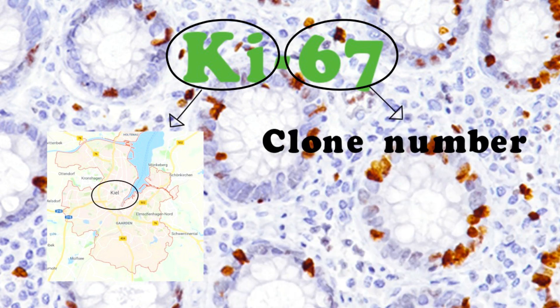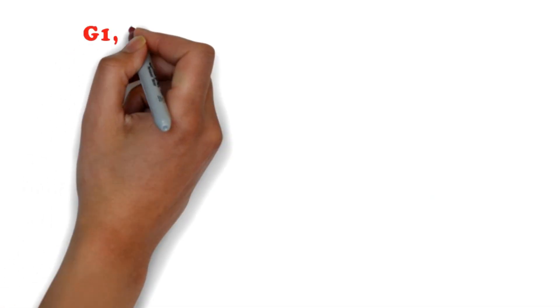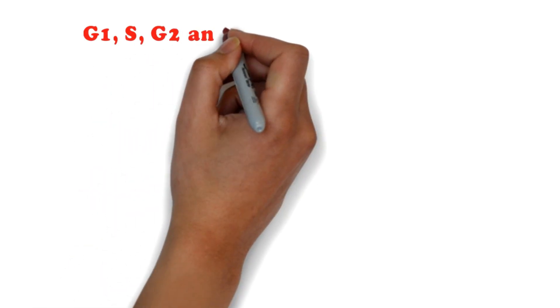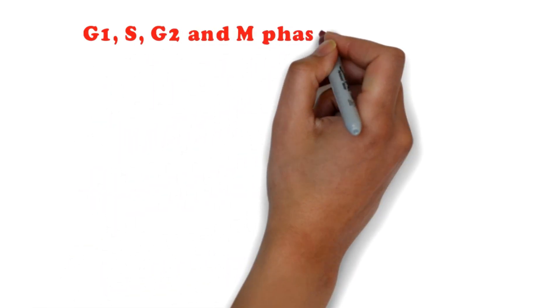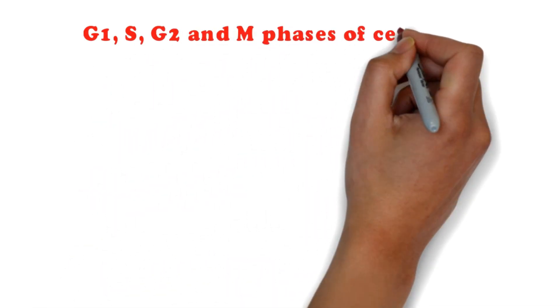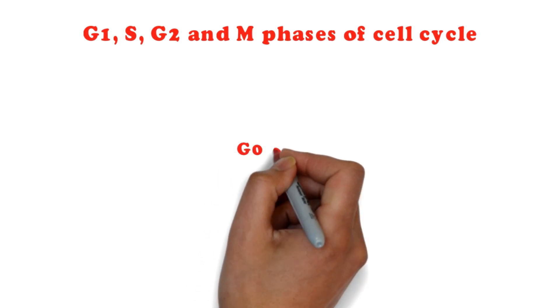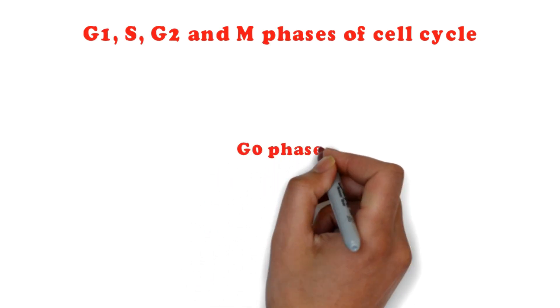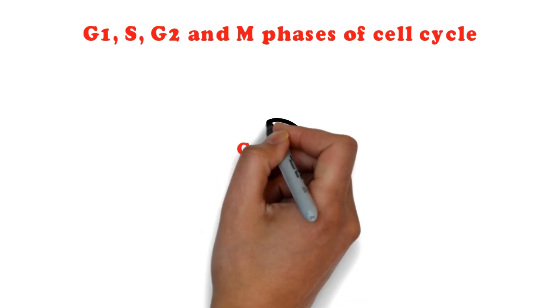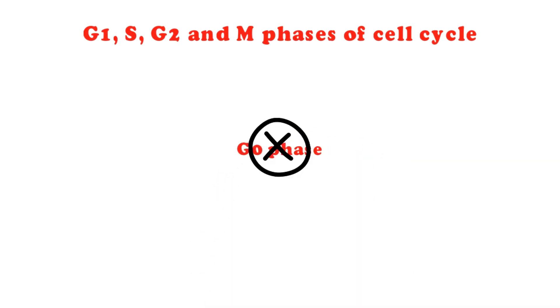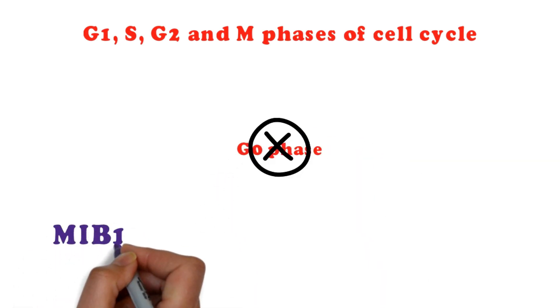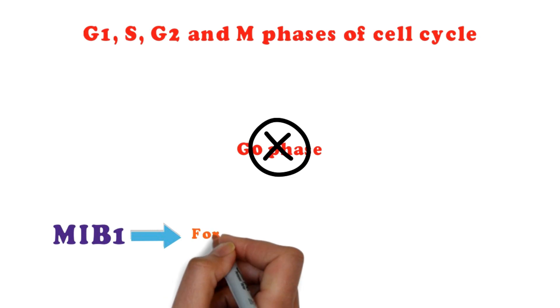Ki-67 is a labile non-histone nuclear protein that is expressed in G1, S, G2, and M phases of the cell cycle, but ki-67 is not detectable in G0 phase. MIB1 is the antibody against ki-67 used for formalin-fixed paraffin-embedded tissues.